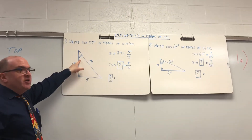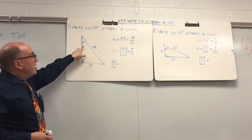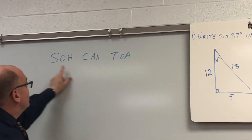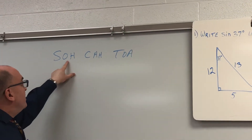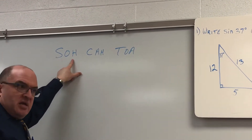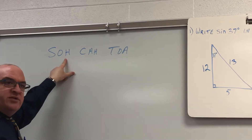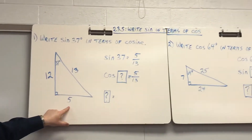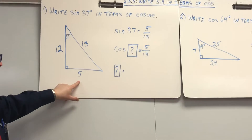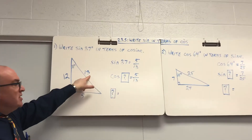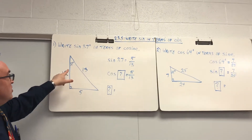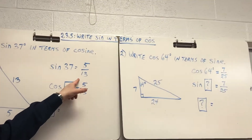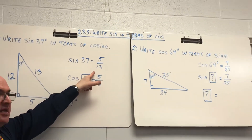So here's 37. What's sine? Remember SOHCAHTOA — sine is opposite over hypotenuse. What's opposite 37? 5. And what's the hypotenuse? 13. So sine 37 equals 5 over 13 in this case.